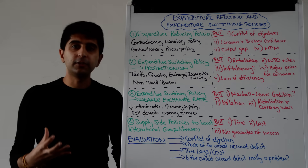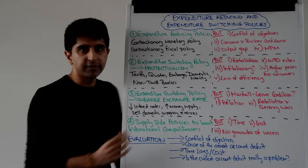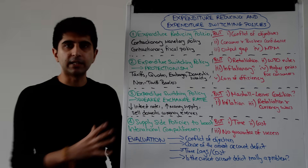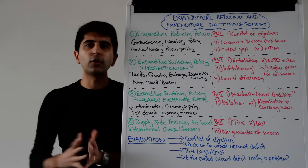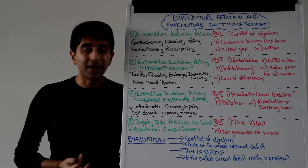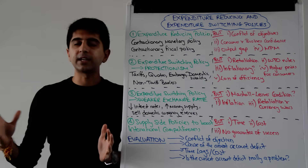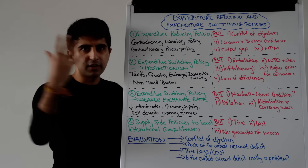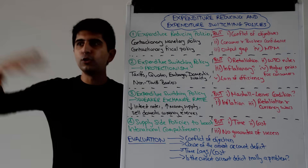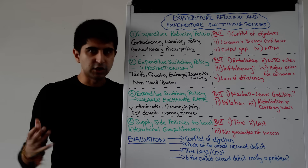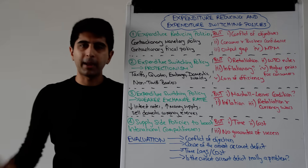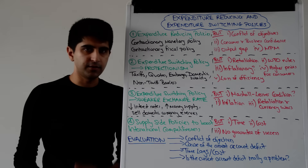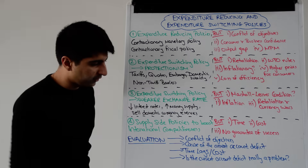What about some evaluation points to consider throughout your essay but then crucially in your judgement? Always look for conflict of objectives. We know what macroeconomics is all about — achieving all of the objectives together, not achieving a satisfactory trade position but then losing growth, employment and inflation control. Anytime that these policies cause a conflict of objectives, that is very good evaluation.